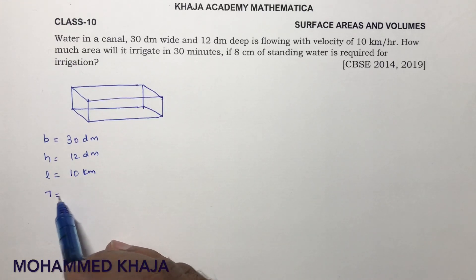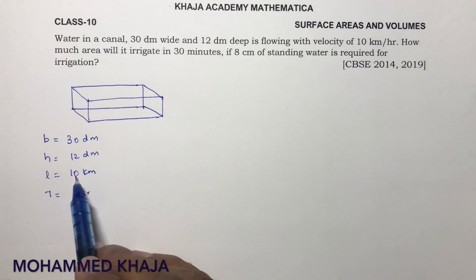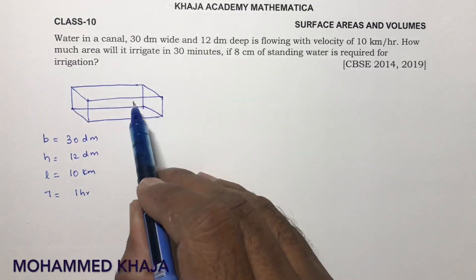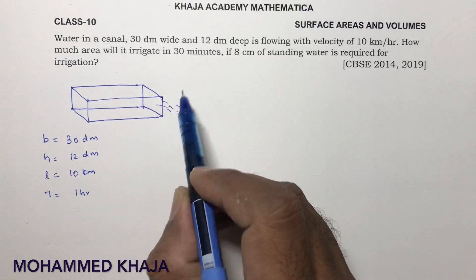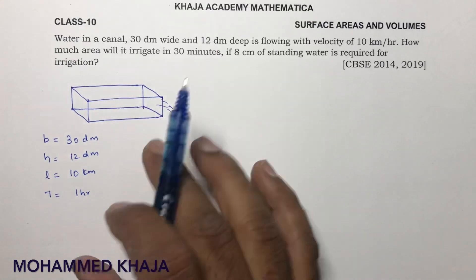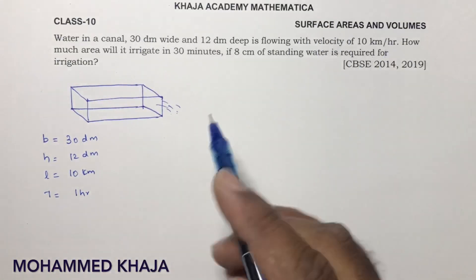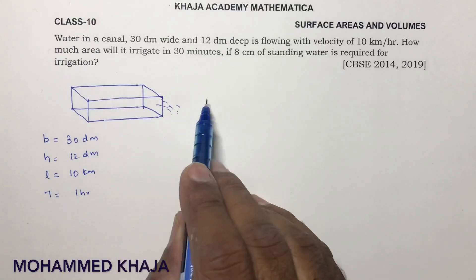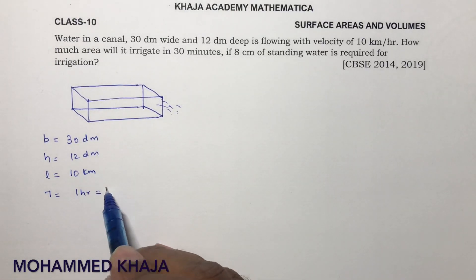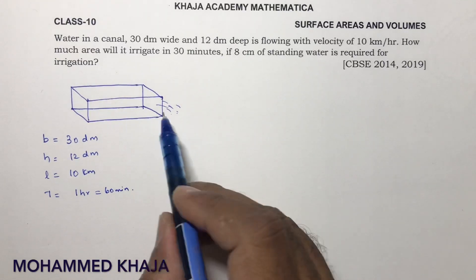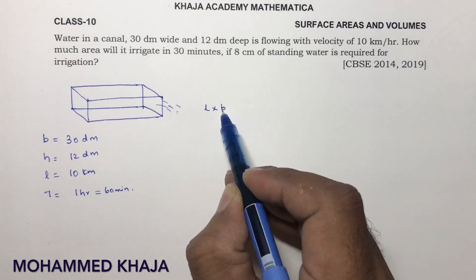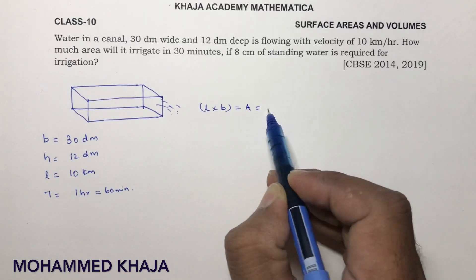In one hour it will cover 10 kilometers. Now this water from the canal flows onto the ground — how much area will it irrigate in 30 minutes? This volume and that volume will be the same because the same water flows. They are asking in 30 minutes, so one hour I'll write as 60 minutes. Here we need to find l into b, because they are asking for area.